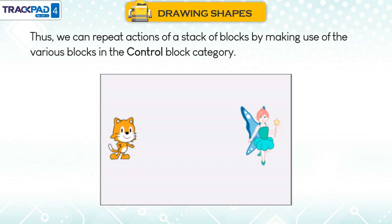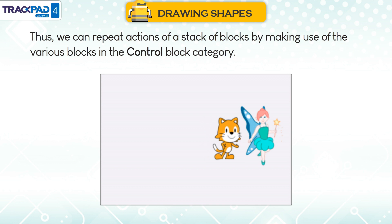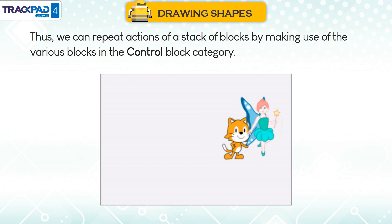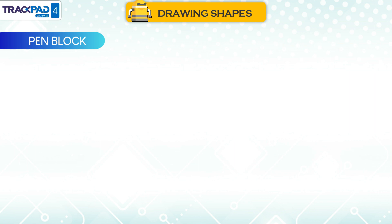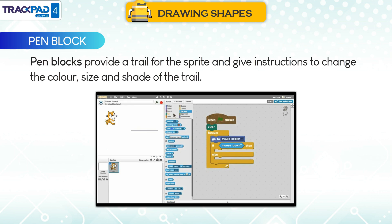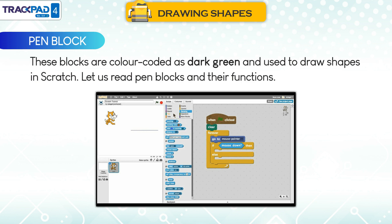We can repeat actions of a stack of blocks by making use of the various blocks in the control block category. Pen blocks provide a trail for the sprite and give instructions to change the color, size and shade of the trail. These blocks are color-coded as dark green and used to draw shapes in Scratch.